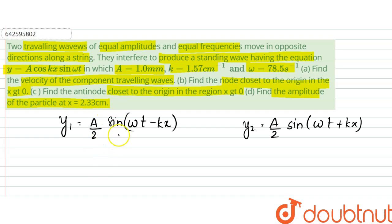So, from here, the wave velocity v equals ω by k, which can be written as ω is 78.5 divided by k. That is 1.57. So, that would be equal to 50 centimeters per second.